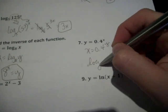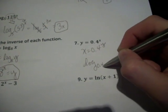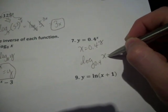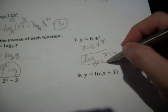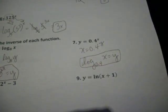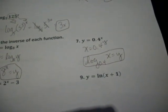So I'm going to have log base 0.4 of X equals Y. And again, the Y is by itself already, so we don't need to do anything else.